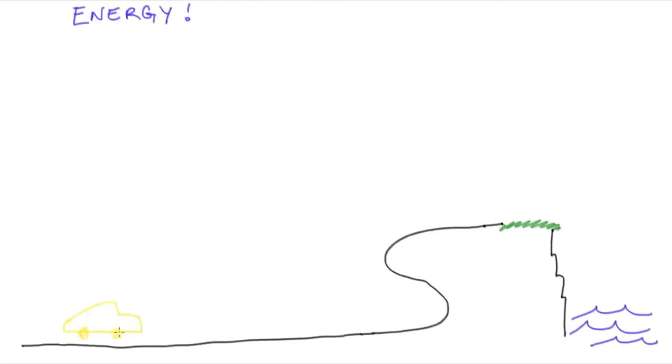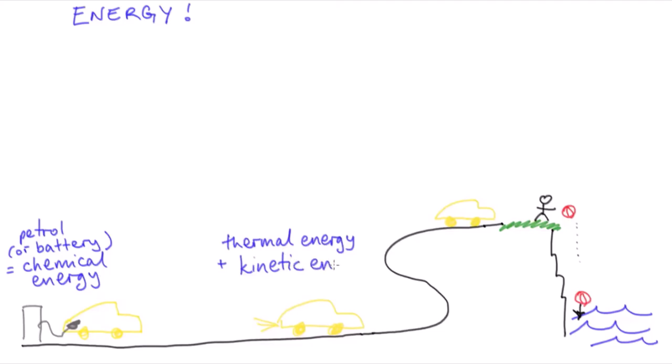So for example, an accelerating car transfers chemical energy into heat by burning petrol, and then some of this heat energy is transferred into making the car go faster, or increasing its kinetic energy. If the car drives up a hill, then some of the chemical energy is used to move the car and everything in it further away from the center of the earth. This means the chemical energy of the petrol has been converted into what's called gravitational potential energy.